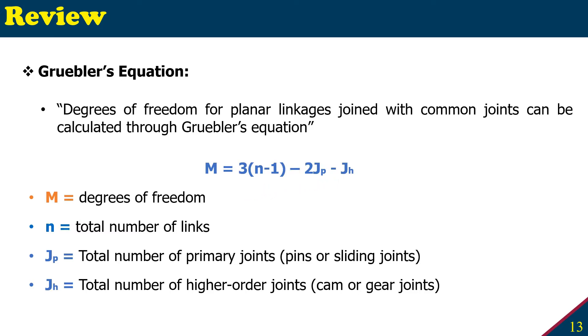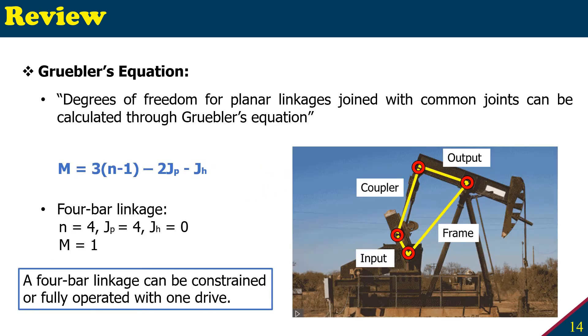Let's apply this formula to our 4-bar linkage. For our 4-bar linkage, if we look at this mechanism here, we have N, total number of links, primary joints - those are pin joints - so 4. There is no cam or gears, so JH is 0. That leaves us M equals 1.